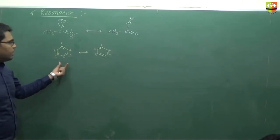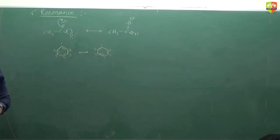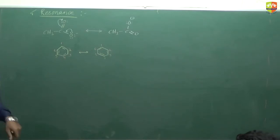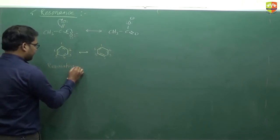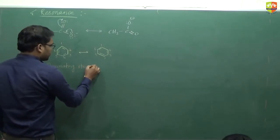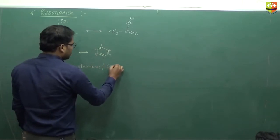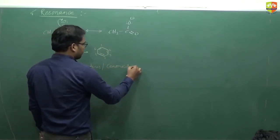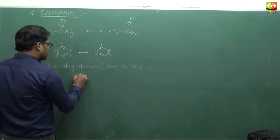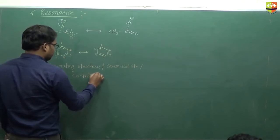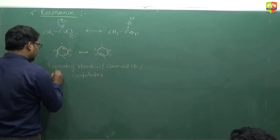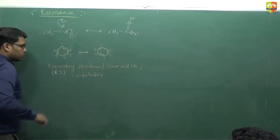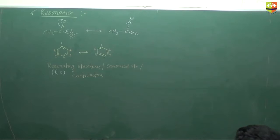All resonating structures, or the different representations that we have, are called resonating structures or canonical structures. We also call them contributors — resonating, canonical, or contributor all mean the same thing. We will use RS for resonating structure most often in this section. RS means resonating structure.